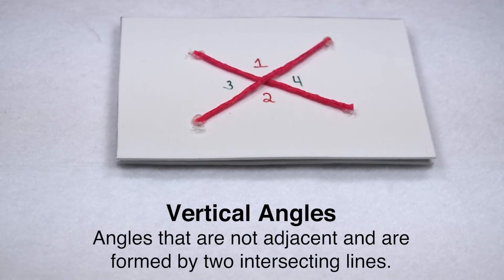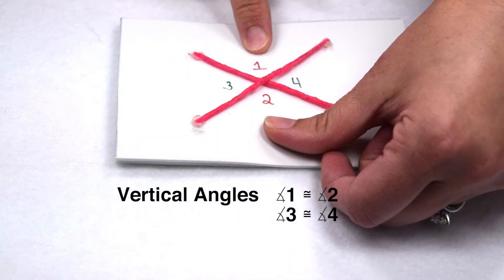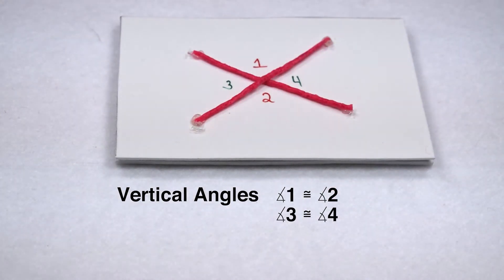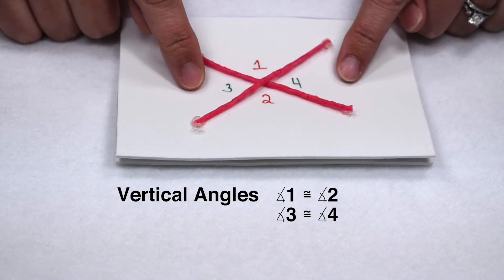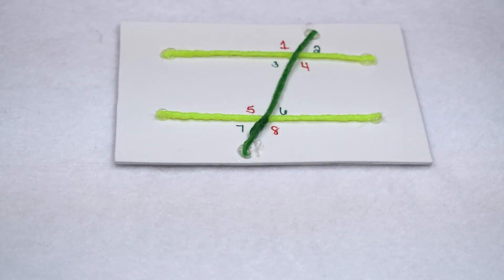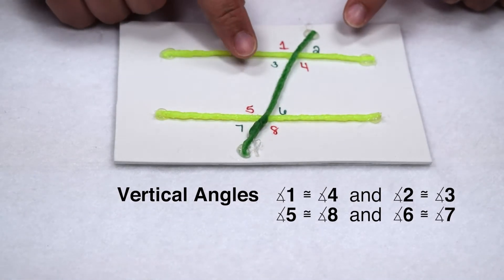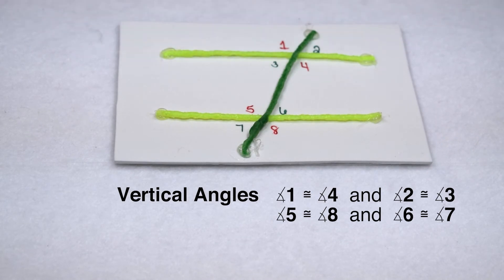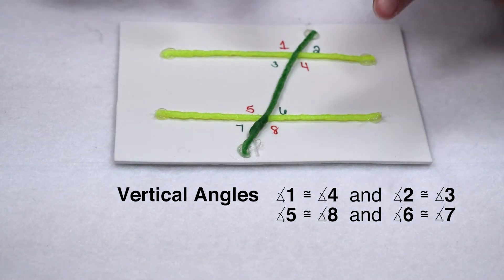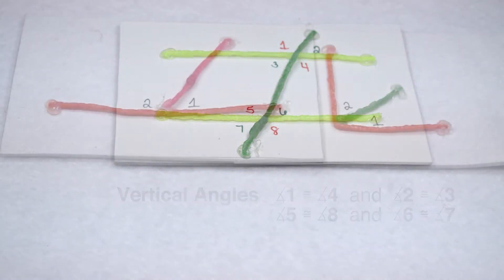Vertical angles would be another set of congruent angles. Vertical angles are angles that are not adjacent to each other and formed by two intersecting lines. So here with our two intersecting lines, one pair of vertical angles would be angle 1 and angle 2, and our other pair of congruent vertical angles would be angle 3 and angle 4. If we go back to our two parallel lines cut by a transversal, we would have four sets of vertical angles: on the top line, angle 1 and angle 4, and angle 2 and angle 3; and on the bottom line, angle 5 and angle 8, and angle 6 and angle 7.